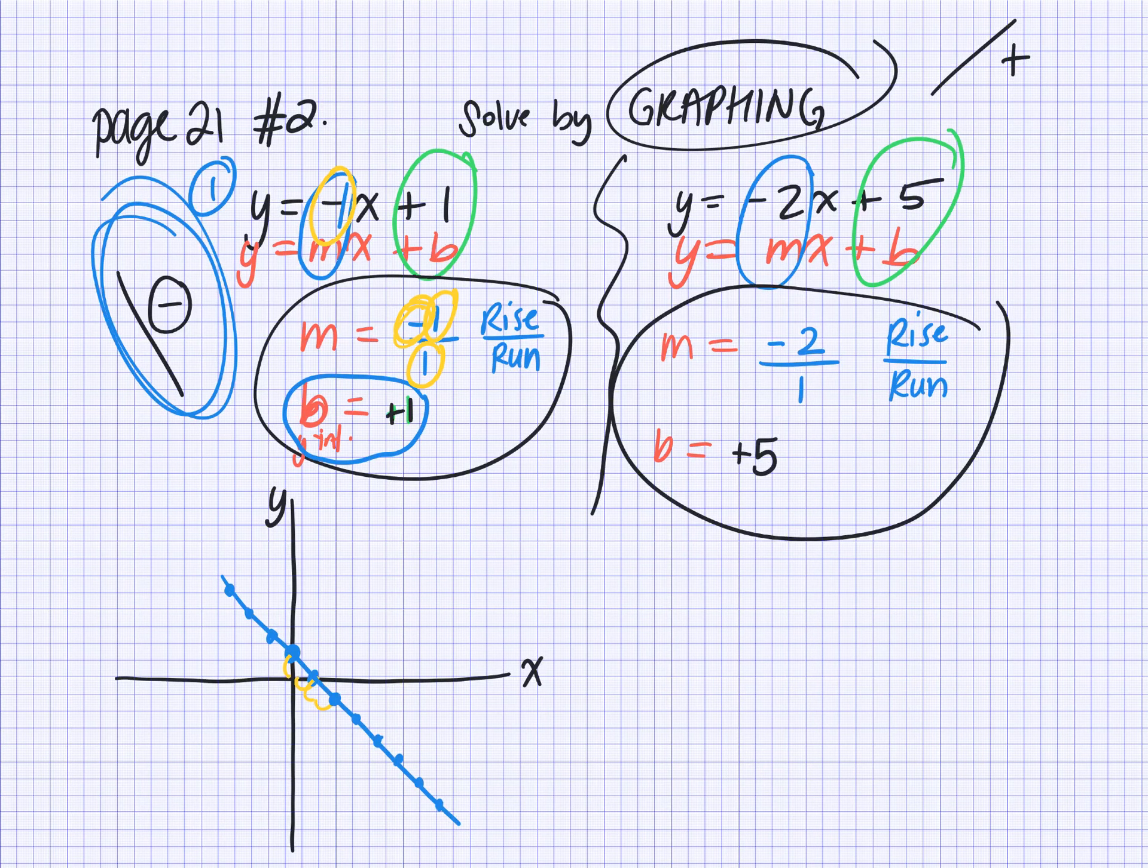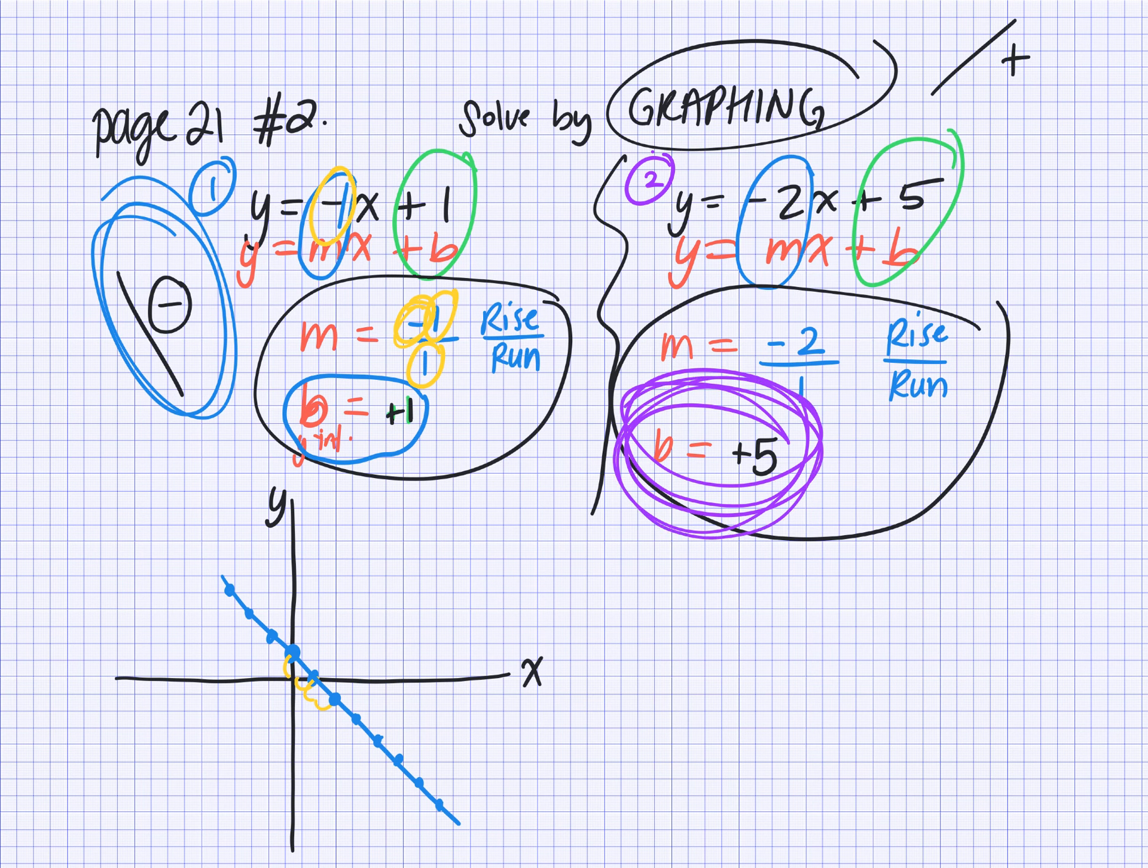So let's do equation 2. I'll make it purple. Starting point. What's the y-intercept? Where does it start? Where does it intercept the y-axis? What number? 5. So here's 1, 2, 3, 4. There's 5.